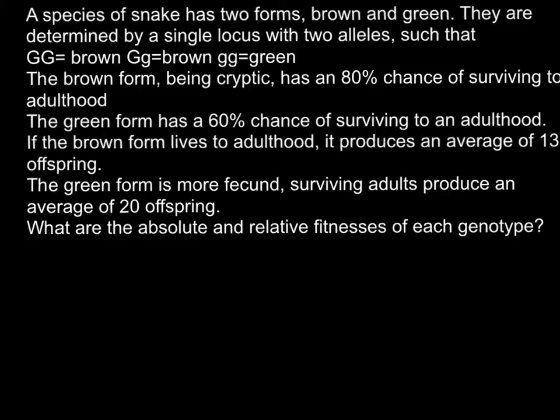Today's problem is: a species of snake has two forms, brown and green, that are determined by a single locus with two alleles, such that homozygous dominant is brown, heterozygous is brown, and homozygous recessive is green.